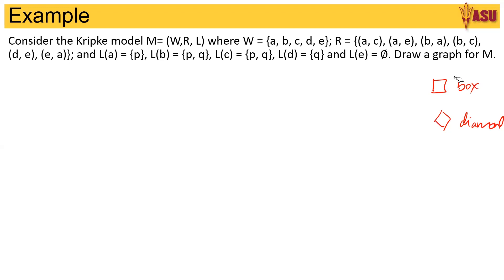Let's now look at the above question and try to write the solution. Consider the Kripke model M in which the world has the following characters or letters A, B, C, D and E.